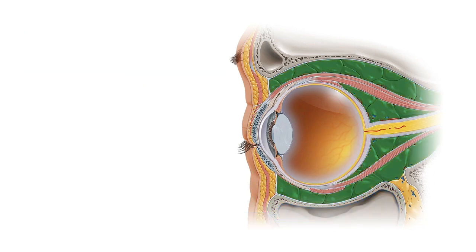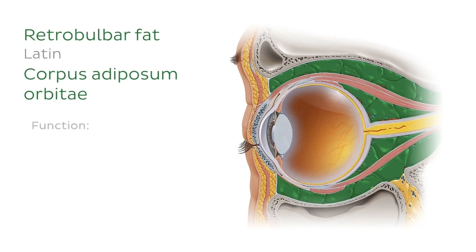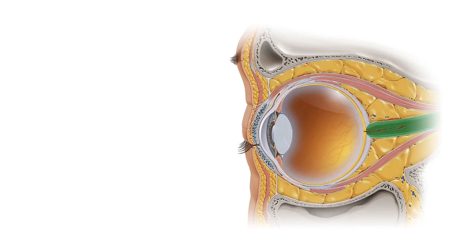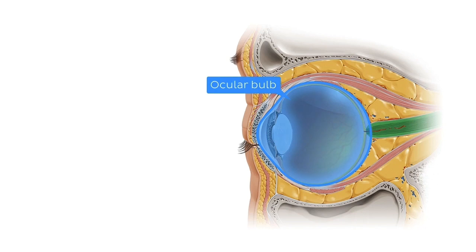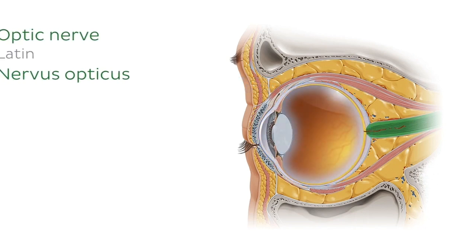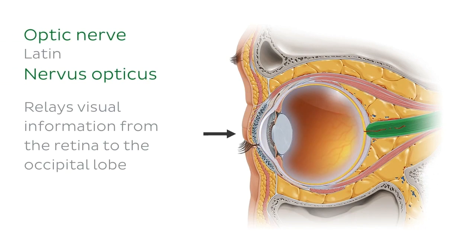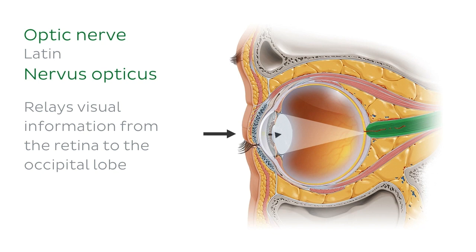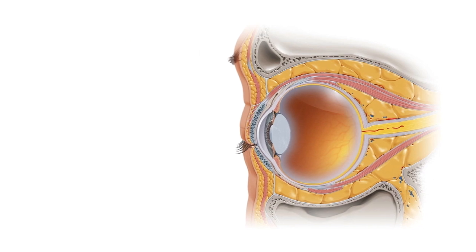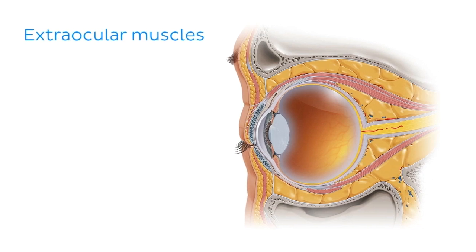The ocular bulb sits in a bed of adipose tissue known as retrobulbar fat. This acts as a protective cushion to the eye, protecting the rather delicate eyeball from bashing off the walls of the orbit as we move our heads. Within the retrobulbar fat, we can see a number of structures attaching to the ocular bulb — the most obvious being the optic nerve, which relays visual information from the retina to the occipital lobe of the brain.